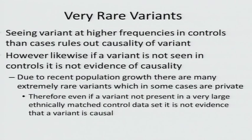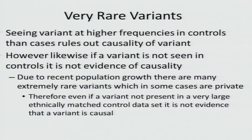Seeing variants at higher frequencies in controls than cases can help rule out that a variant is causal. However, we can't use the opposite logic and say that if a variant is not seen in controls, it is evidence of causality. Due to recent population bottlenecks, there are many extremely rare variants—in some cases private. Even if you had an extremely large database of ethnically matched controls and didn't find that variant, that is not evidence of causality.